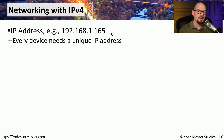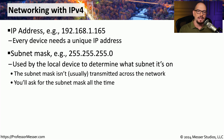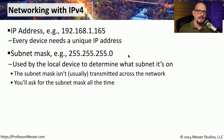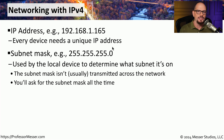The IP address is combined with another value referred to as the subnet mask. The subnet mask is also a four-octet value — for example, 255.255.255.0. The subnet mask is used in conjunction with the IP address to determine what IP subnet this particular device is on.